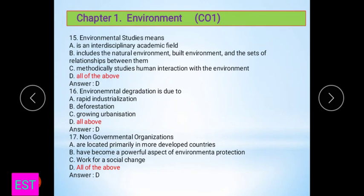Next question: Environmental degradation is due to rapid industrialization, deforestation, and growing urbanization. All are correct options. That's why D is correct. Non-governmental organizations are located primarily in more developed countries, have become a powerful aspect of environmental protection, work for social change. All of the above option is correct.